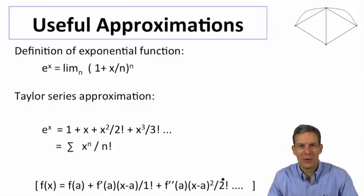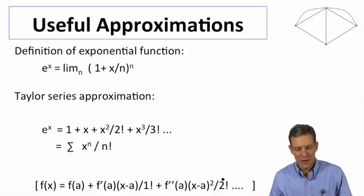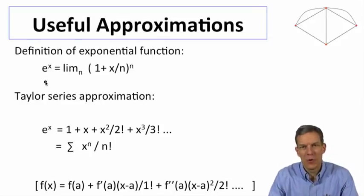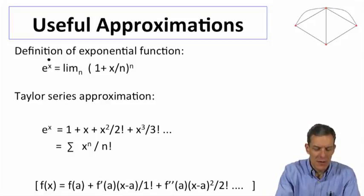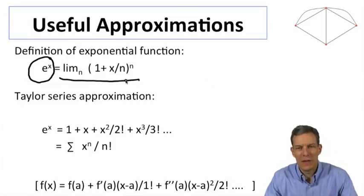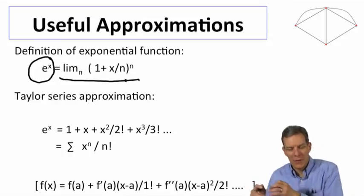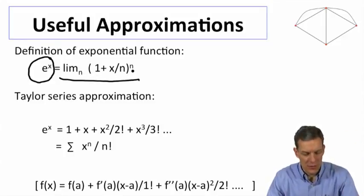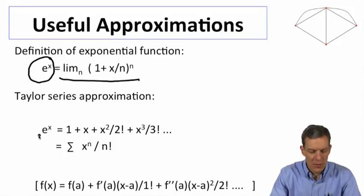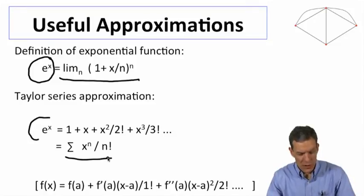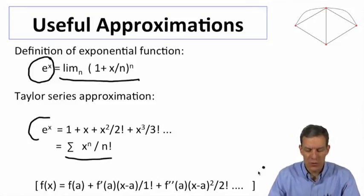First, just to remind you of some useful approximations of the exponential function — in case your calculus is a little bit rusty. Two forms will be very useful. One is that e^x can be thought of as the limit of (1 + x/N)^N as N goes to infinity — think of this as continuous compounding of interest. Another is the Taylor series approximation: we can write the exponential function as the sum of x^N over N factorial.